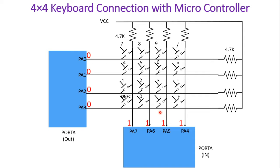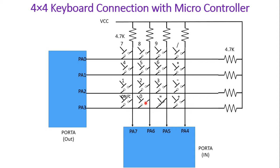Let us understand this with an illustration. Suppose the equal-to key is pressed. Current now flows through that path — there is a short connection between the fourth row and third column. So PA5, the third column pin, will now read 0 instead of 1. Once any one of the column inputs changes from 1 to 0, that gives us the indication that some key has been pressed, and we need to start scanning exactly which key was pressed.